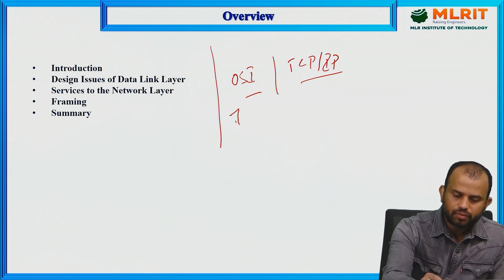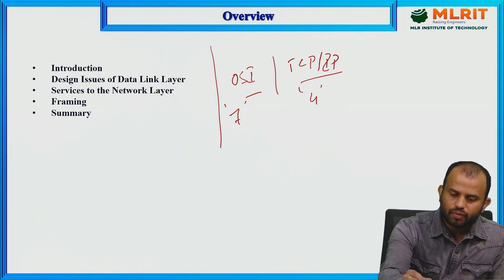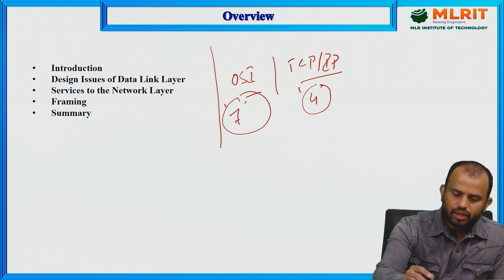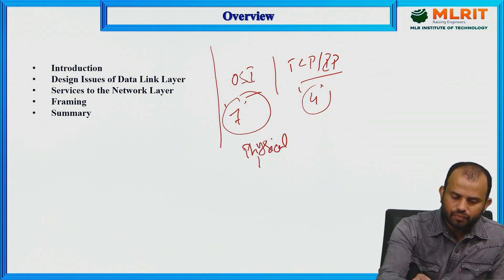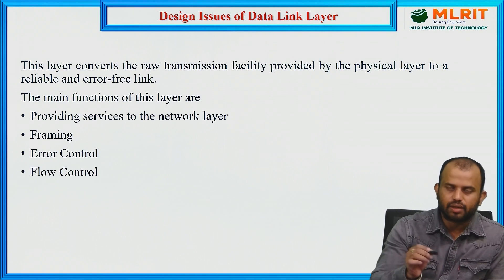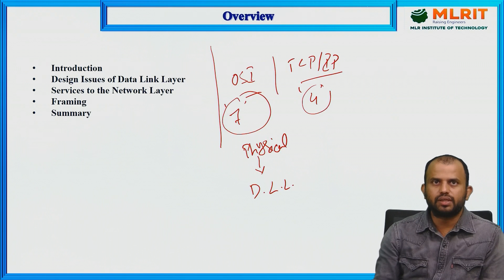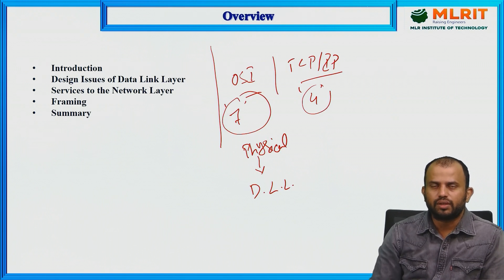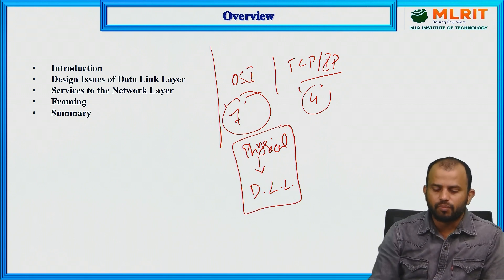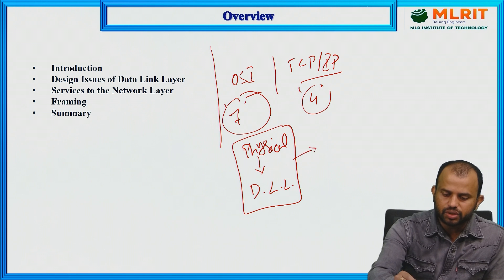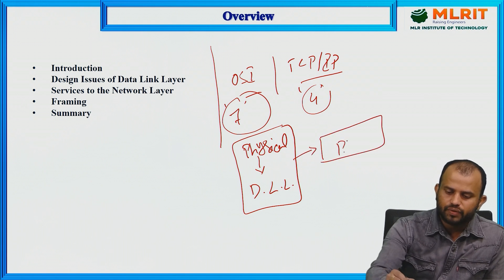In the OSI model we have seven layers, and in TCP/IP we use four different layers. The physical layer plays a vital role in signal transmission from source to destination. After the physical layer, we have another layer which we call the data link layer, which plays an important role in signal transmission from one end to another through the physical layer. In the OSI reference model, these two layers act as individual layers, but in the TCP/IP model these two layers are merged and form a single layer, which we call the physical layer.